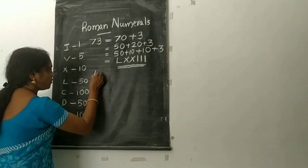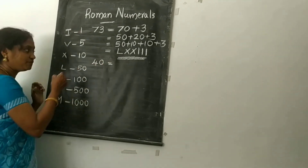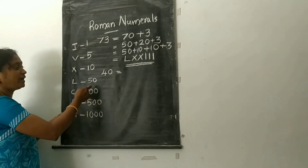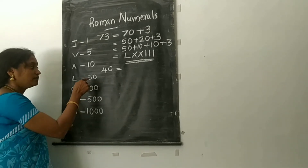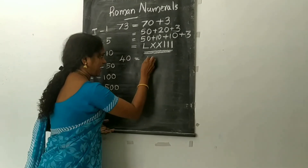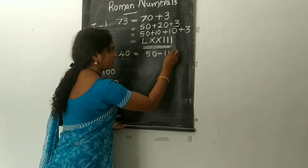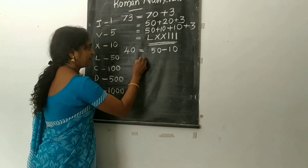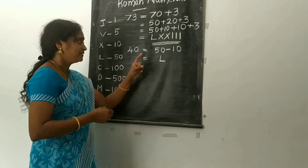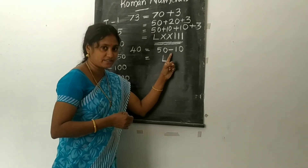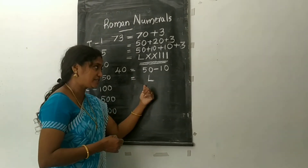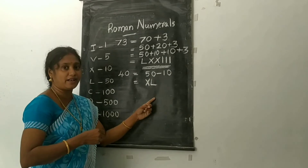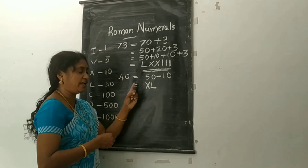The second problem: write 40 in Roman numerals. There is no symbol for 40, but 40 is close to 50. We write 40 as 50 minus 10. Since it is subtraction, we write X on the left side of L. Therefore, 40 is written as XL.